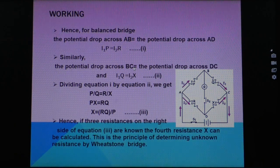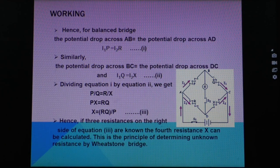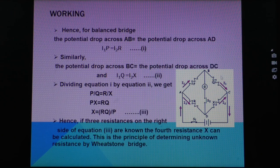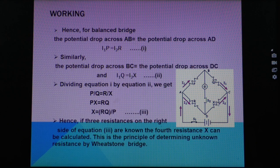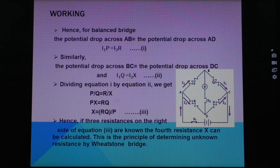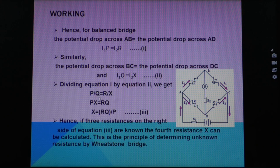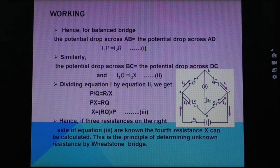The potential drop across BC is I1·Q, which is equal to the potential drop across DC, that is I2·X. So when potential drop across BC equals potential drop across DC: I1·Q = I2·X. Dividing equation one by this equation, I1 and I2 cancel, giving P/Q = R/X. By cross multiplication, P·X = R·Q, and you can find the value of unknown resistance X as: X = RQ/P. Let this be equation number three.